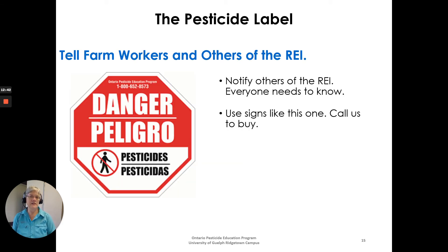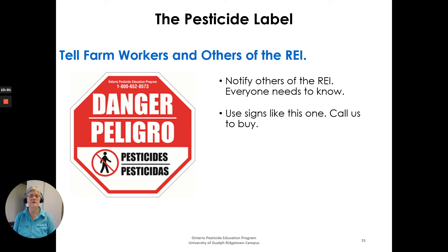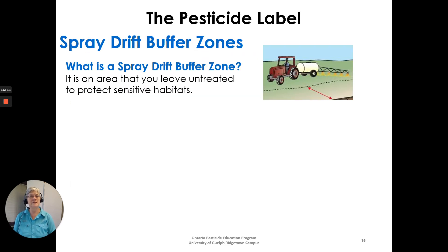To keep farm workers and others out of a treated area, tell them verbally about the restricted entry interval. You can also use posted signs — available from the Ontario Pesticide Education Program — and remove the sign once the entry interval is over.